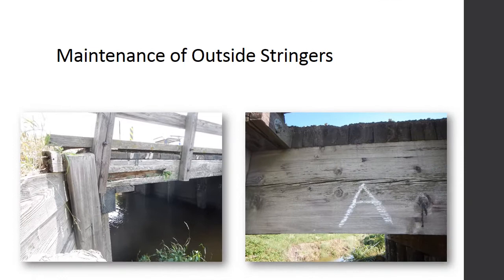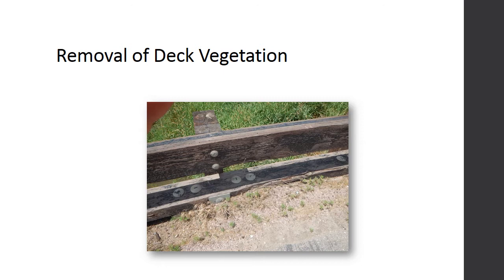The outside stringer on a timber bridge is more susceptible to deterioration due to its increased exposure to rain, sunlight, and debris flow. All dirt and loose, decayed material should be removed, and consideration should be given to adding flashing to prevent excessive wetting if checks and splits are present. Timber decks can be susceptible to vegetation growth as gaps between deck boards fill with dirt and gravel, creating an environment for vegetation to grow. Vegetation growth indicates that debris is collected and water is being retained; the vegetation and debris should be cleared to prevent deterioration of the deck.